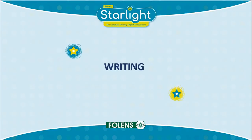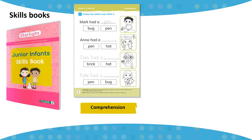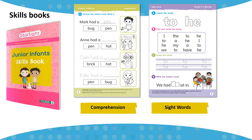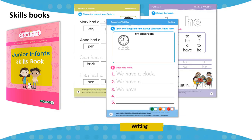Starlight has a highly systematic approach to teaching writing. A skills book accompanies the junior and senior infant core readers. Each unit in the skills book contains a comprehension activity, a sight word activity and a writing activity. Writing activities are linked to the text genre — for example, if the unit text was a report, the writing activity would provide a gentle introduction to report writing.